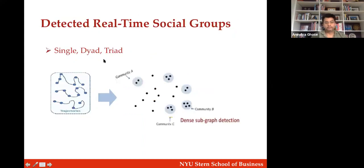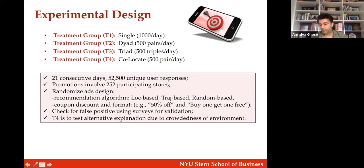I'd like to take about five more minutes to discuss a follow-up paper. One of the questions was about social groups and how they affect shopping. We followed this up with an analysis contrasting a single shopper with a couple, a group of two, a group of three, or a group of four. We use the same algorithm — location-based targeting, trajectory-based targeting, random targeting — but here we use a difference-in-differences method.